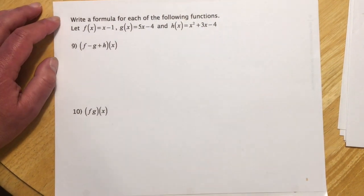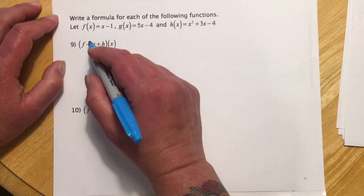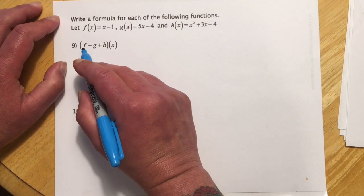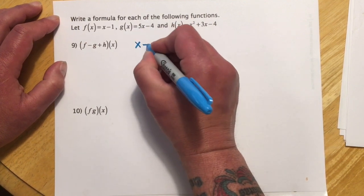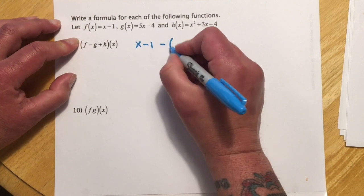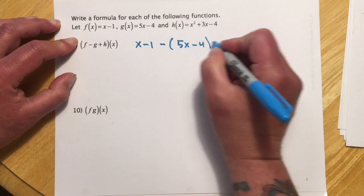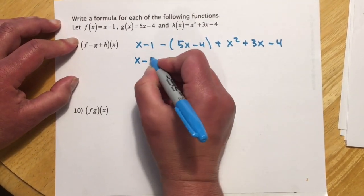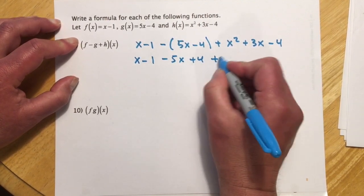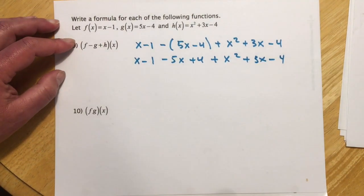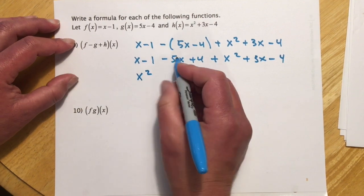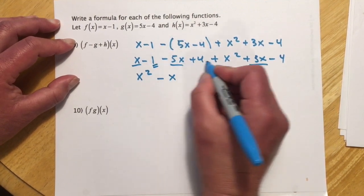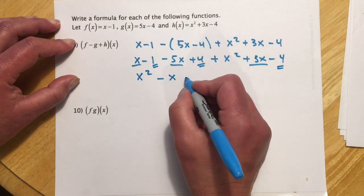This starts section 2.4, where we do algebra with f, g, and h rather than evaluating at a number. This is literally saying f minus g plus h. That looks like (x minus 1), which is f, minus g — and anytime you subtract you need parentheses — plus h. Distributing the negative through and collecting terms: x squared, then x minus 5x plus 3x gives minus x, and the constants minus 1 plus 4 minus 4 leaves minus 1.